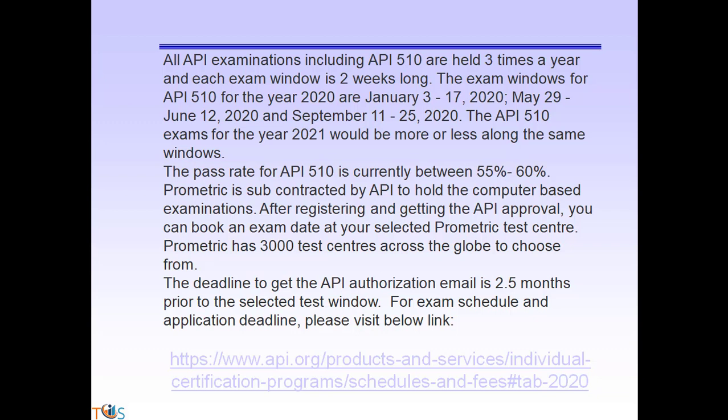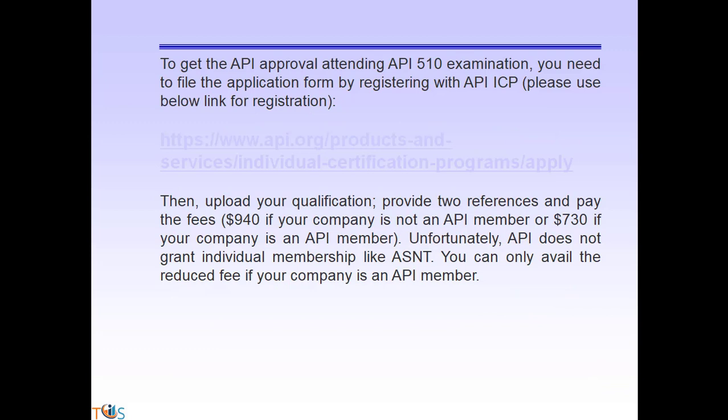Prometric is subcontracted by API to hold the computer-based examination. After registering and getting API approval, you can book an exam date at your selected Prometric test center. Prometric has 3,000 test centers across the globe. The deadline to get the API authorization email is two and a half months prior to your selected test window. To attend the API 510 examination, file the application form by registering with API ICP, upload your qualifications, provide two references, and pay the fees.